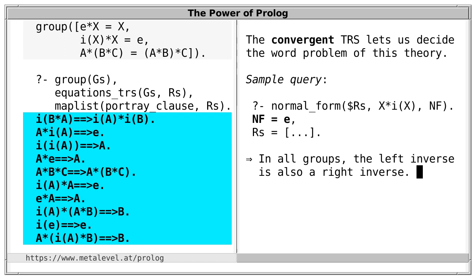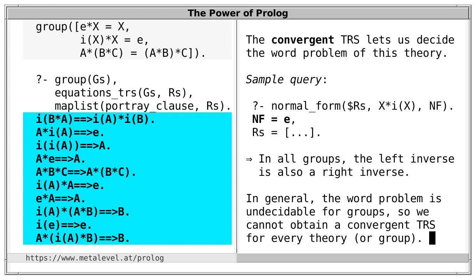However, in general the word problem is undecidable, even for groups — there are groups where additional axioms hold leading to undecidable word problems, and in such cases we can't obtain a convergent TRS. So term rewriting doesn't solve all our problems, but it's well worth knowing and it works beautifully in many cases.